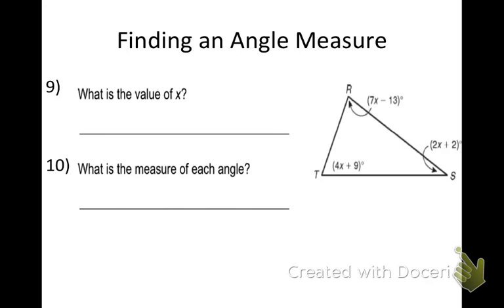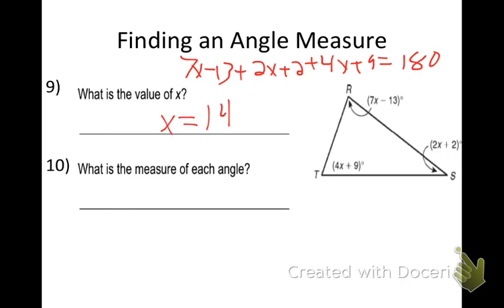Number 9 here. Callie, set it up for me. 7X minus 13 plus 2X plus 2 plus 4X plus 9 equals 180. This is a long problem. When you work it out, you get X equals 14. You plug them all back in. Callie, what do you get when you plug them back in? S is 30, R was 85, and T is 65 degrees. Nice job. Check yourself. 30, 85, 65. Becca, is that what you got? Good work.